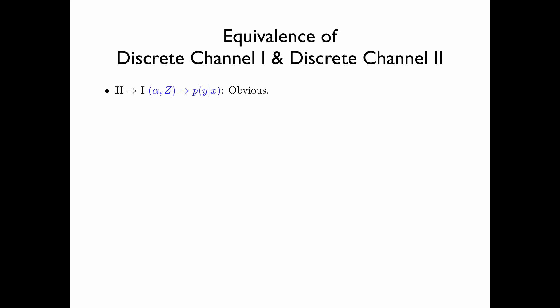We have introduced two definitions of a discrete channel — namely discrete channel 1 and discrete channel 2 — and now we are going to show that these two definitions are indeed equivalent. First, if a channel can be modeled as a discrete channel 2, then it can also be modeled as a discrete channel 1. This is obvious because, given a discrete channel 2 specified by alpha and z, we can simply compute the transition matrix P(y|x), giving us a discrete channel 1 equivalent to the given discrete channel 2.